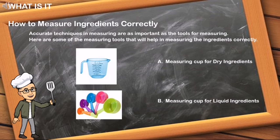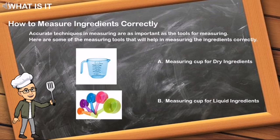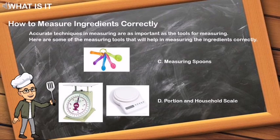Accurate techniques in measuring are as important as the tools for measuring. Here are some of the measuring tools that will help in measuring the ingredients correctly: measuring cup for dry ingredients, measuring cup for liquid ingredients, measuring spoons, portion scale, and household scale.